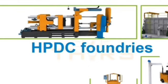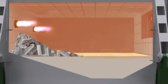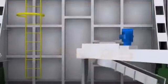HPDC foundries typically require several pieces of equipment for each step in the process. The melting furnace is required to melt the charge materials and bring the molten metal to the required temperature.